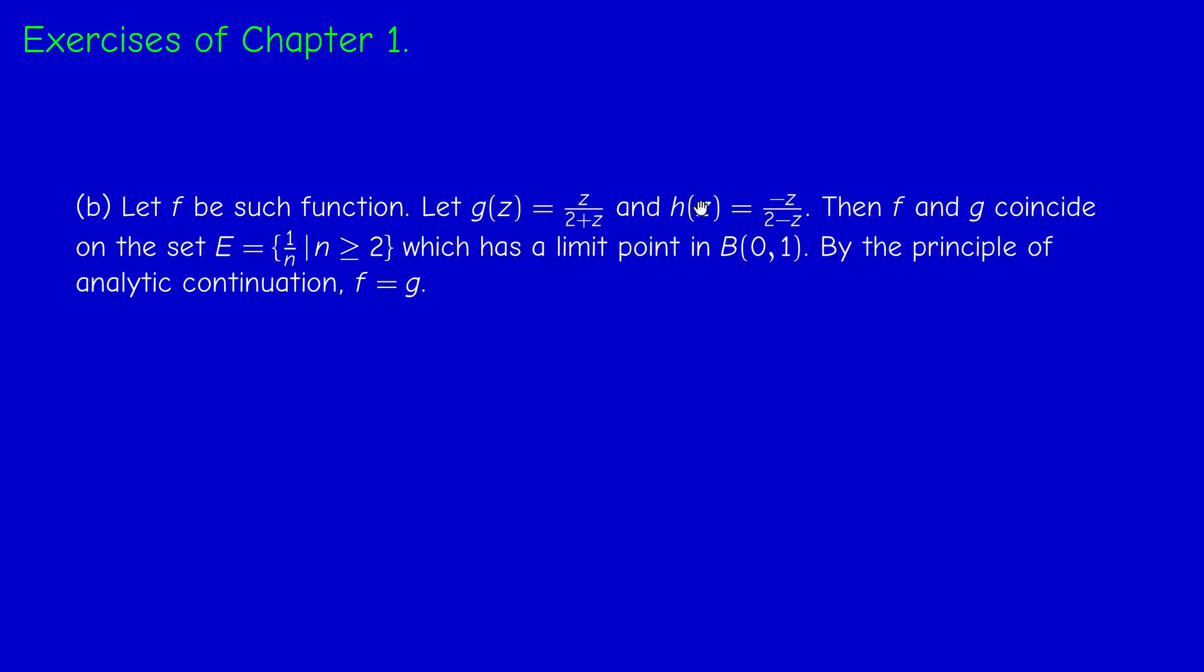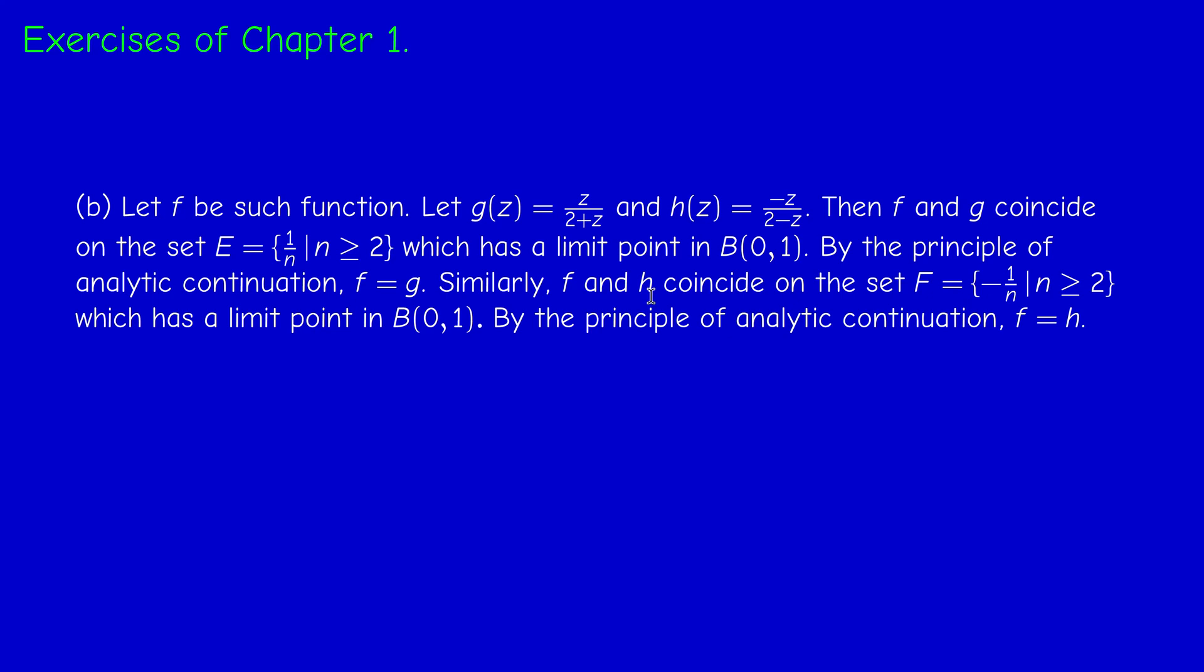But now, if you repeat the same thing with H and F, we see that F and H coincide on the symmetric of this set, so it's minus one-half, minus one-third, etc., which also has zero as a limit point. So the principle of analytic continuation tells us that F coincides with H. So we get F equals G and F equals H. Therefore, G equals H. So these two functions are equal.